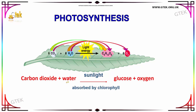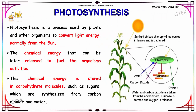Here you can see the reaction of photosynthesis: carbon dioxide reacts with water in the presence of sunlight, which is absorbed by chlorophyll, and then it gives glucose and oxygen. This reaction is carried out in photosynthesis. Now we are going to see even more about photosynthesis.